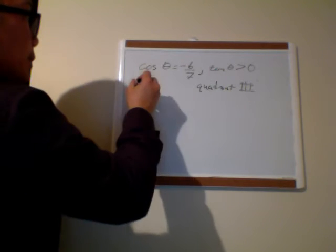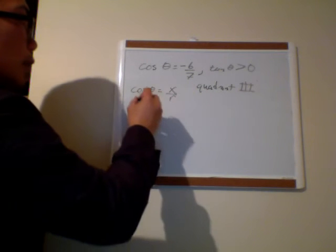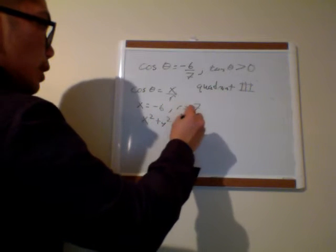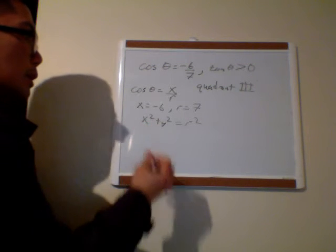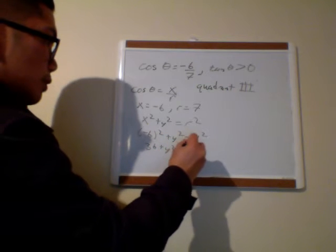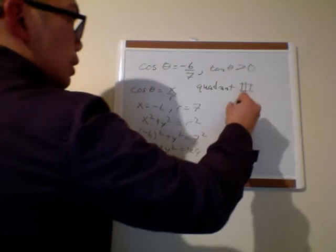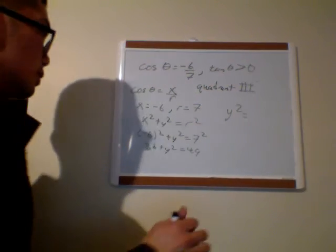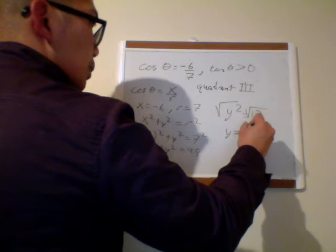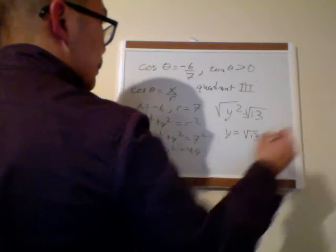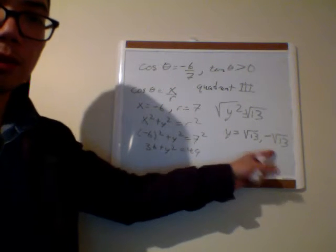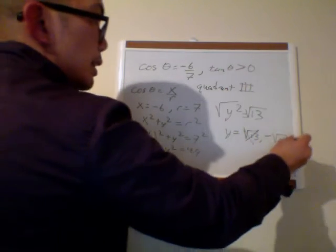Remember that cosine theta is really x over r. So I know my x is negative 6 and my r is 7. Now let's find y: negative 6 squared plus y squared equals 7 squared. I get 36 plus y squared equals 49, so y squared equals 13. Taking the square root gives y equals positive root 13 or negative root 13. Since I'm in quadrant 3, my y values are negative, so y is negative root 13.